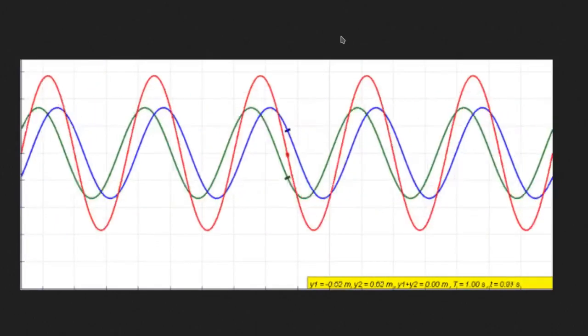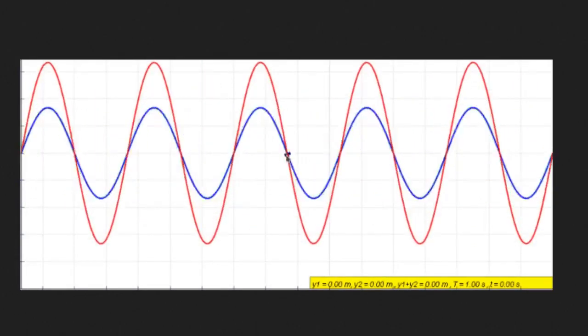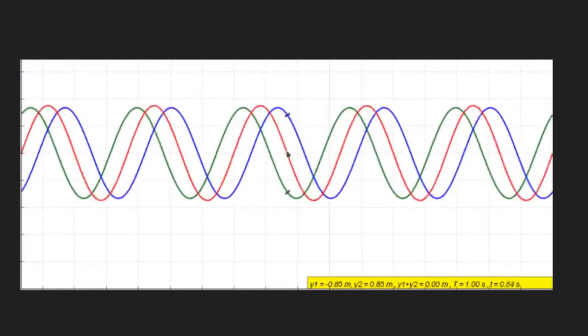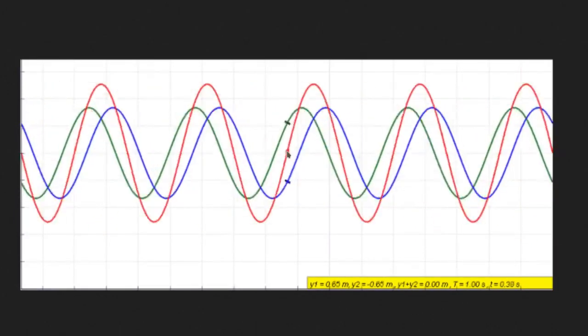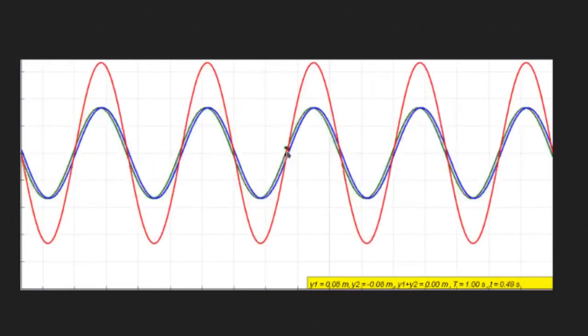When you pick a certain point like the one here and add the green and the blue wave, you end up with a so-called standing wave.